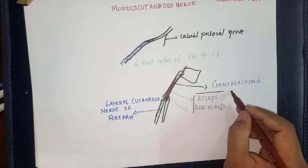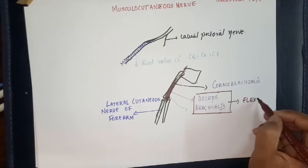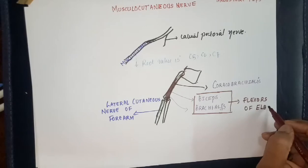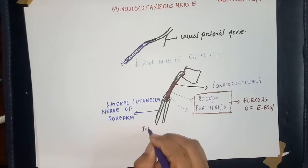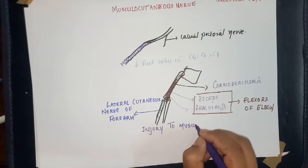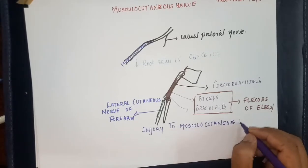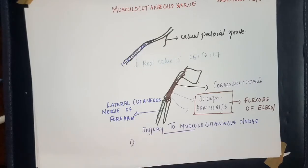The biceps and the brachialis muscles are the flexors of the elbow. So, what happens when the musculocutaneous nerve is injured? The flexion at the elbow is affected.